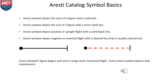All Aresti symbols follow some simple conventions. The start of a figure will be a solid dot. The end of a figure will be shown as a short slash line. Where positive or upright flight is to be flown, you will see a solid black line. Where negative or inverted flight is to be flown, you will see a dashed line that is usually colored red.